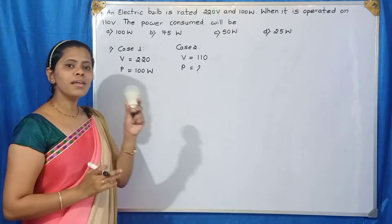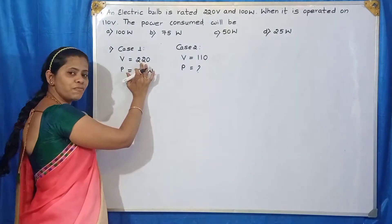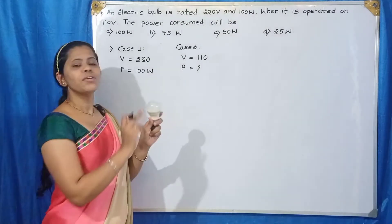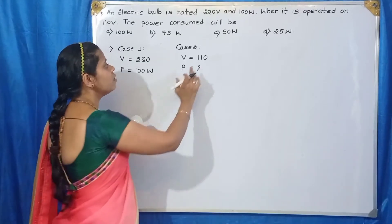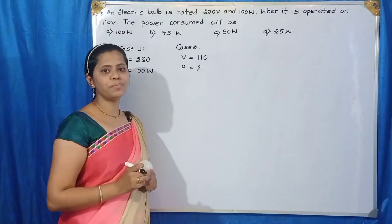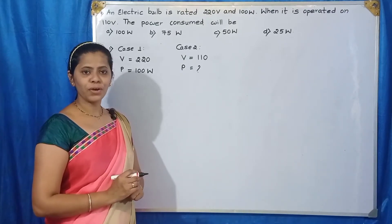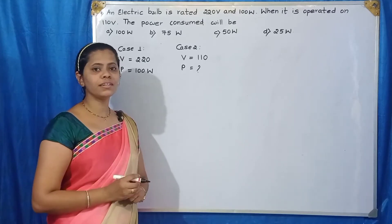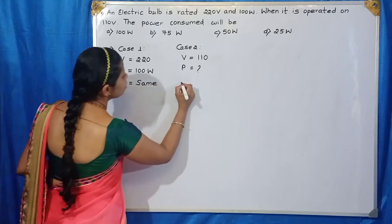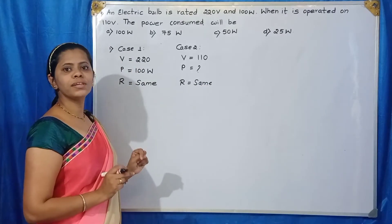In both the cases, we are using the same bulb, but we are changing the voltage. In the first case, we are connecting the bulb to 220V, and in the second case, to 110V. We know that the resistance remains the same in both cases because we are using the same bulb and not changing it. So resistance will be the same — we say R is common. The resistance does not change since we are using the same electric bulb.